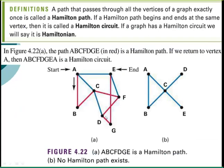In this picture, the path ABCFDGE in red is a Hamilton path. If I follow this and go from A to B, B to C, C to F, F to D, D to G, and then up to E, you're completing a path through all of the points.